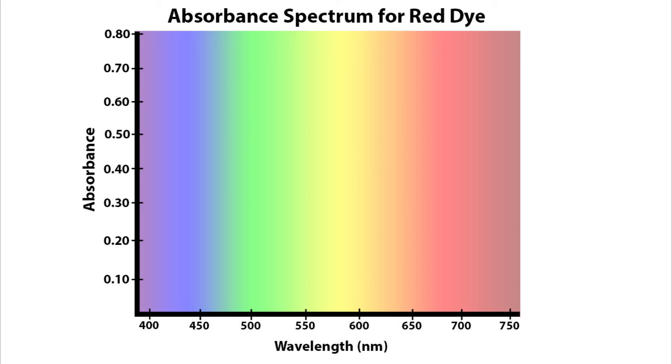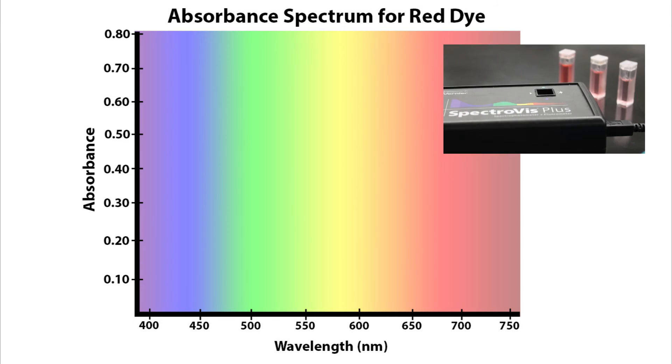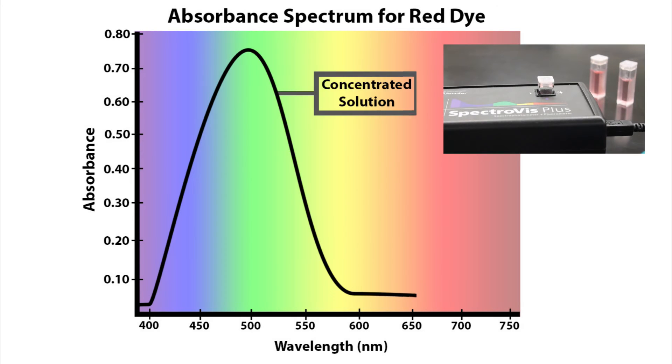Let's see how our dilutions look on a spectrograph. We will start with the most concentrated one. With absorbance on the y-axis and wavelength on the x-axis, we end up with an absorbance spectrum like this. Does this make sense for a red dye? Well, the peak of the absorbance is happening at 498.7 nanometers, which is in the green spectrum of light. So yes, this makes sense.